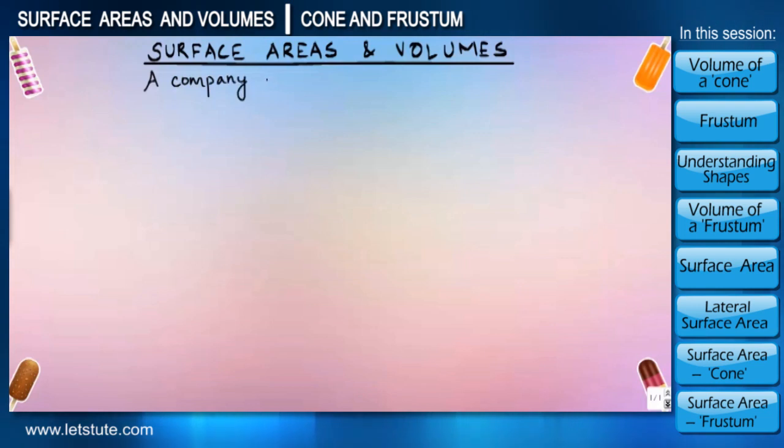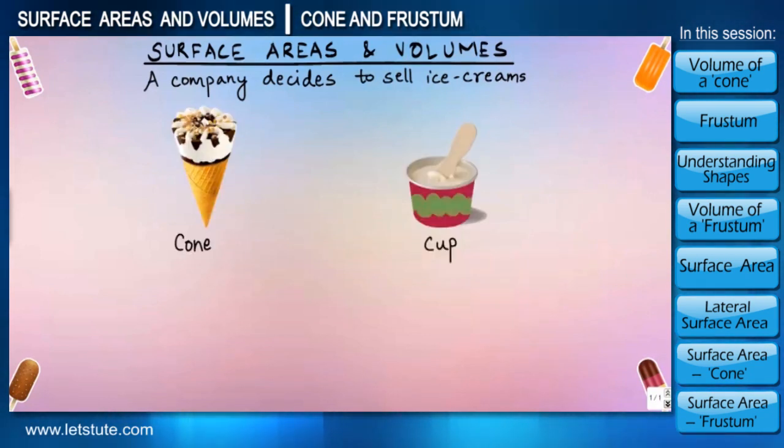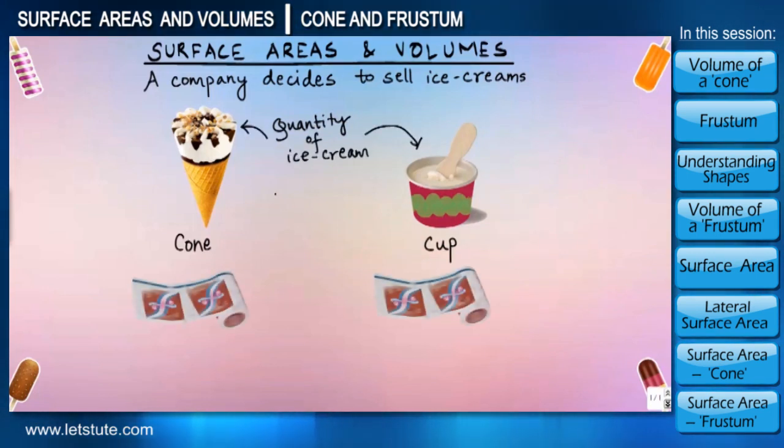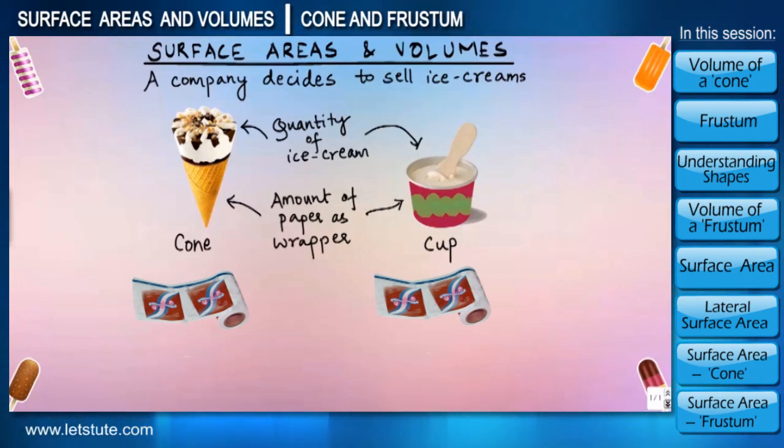Suppose a company is planning to start a new business of selling ice creams and they decide to distribute it in cones as well as in cups. But before they start, they need help regarding two things. First, how much quantity of ice cream this cone and cup can hold, and second, how much paper they will require to wrap each of these two shapes. That's where our role comes into picture. As a mathematician, we have to help them out with these two important criteria.